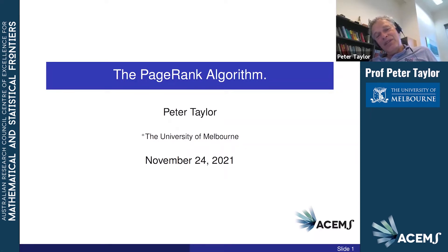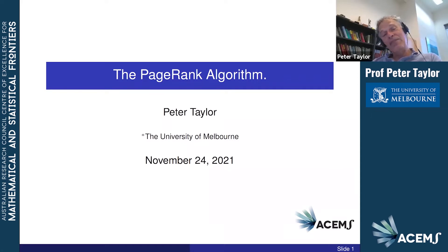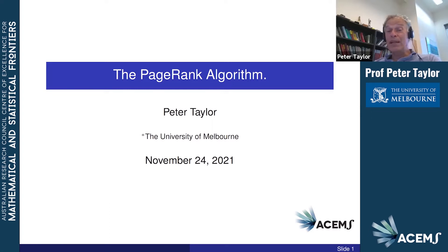I'm going to talk about the PageRank algorithm, which is not really something I've done any work on myself — I've done a little bit, which I'll mention near the end. But I think it's a really interesting case study in the use of mathematics for the utility of society, and how a mathematically quite simple idea can go an enormous distance.